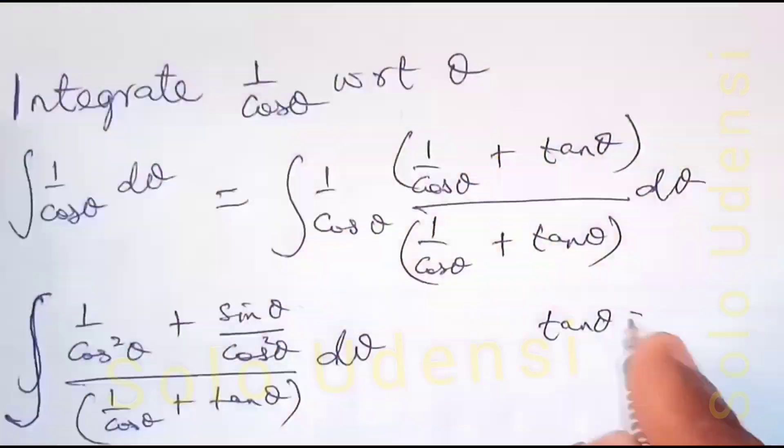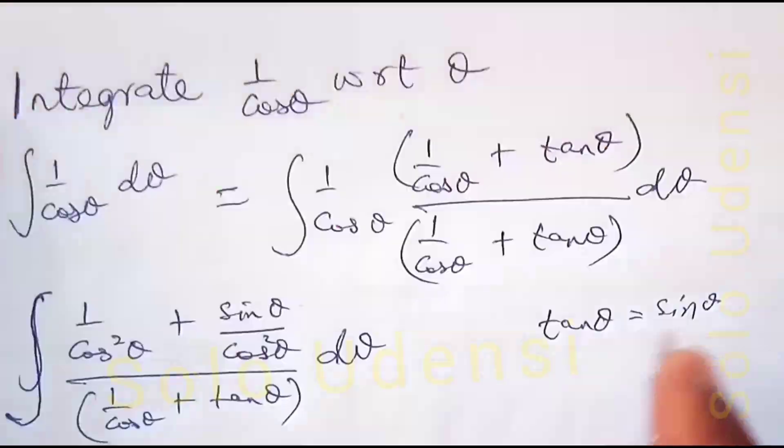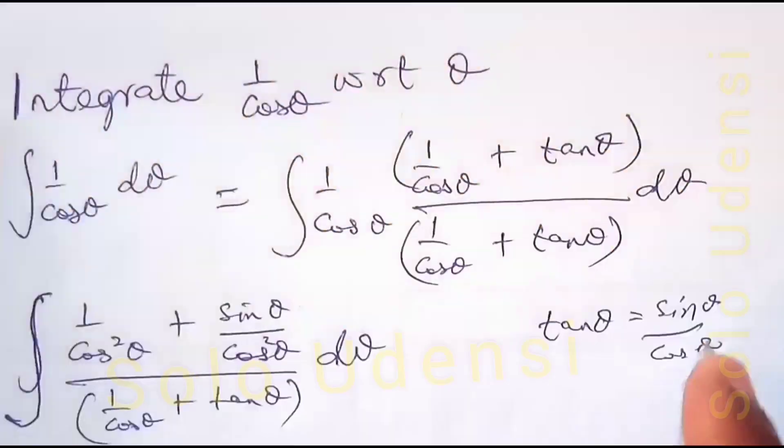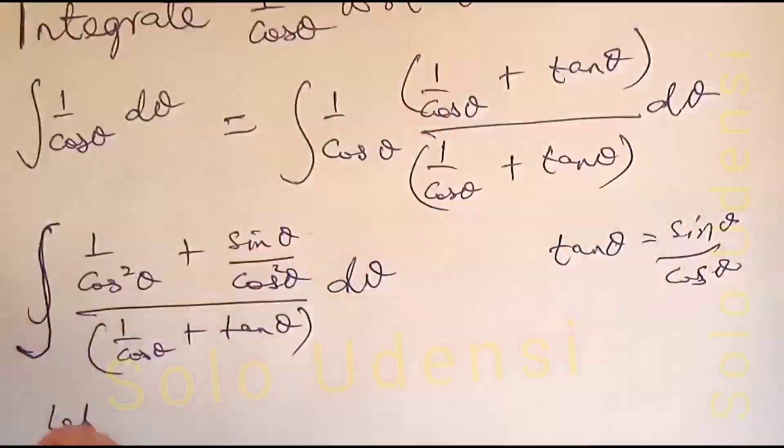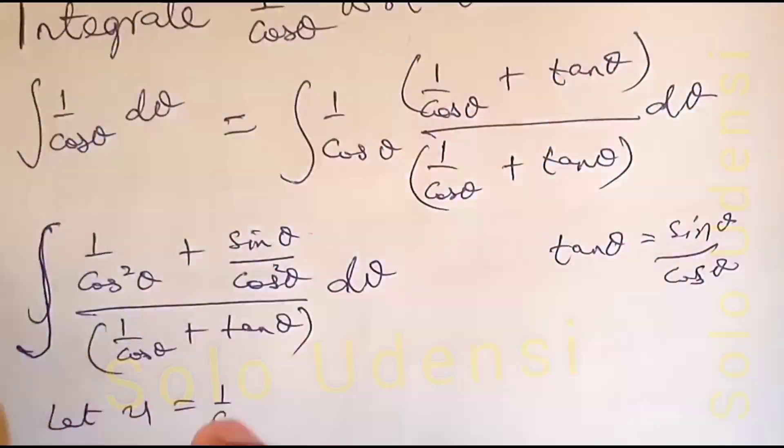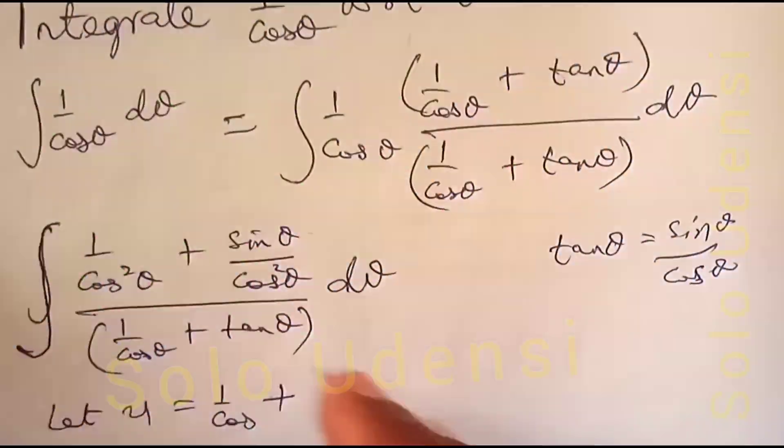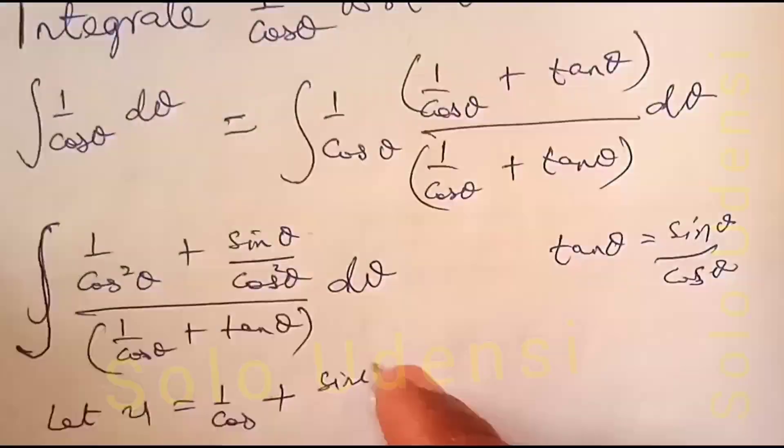Tan theta is sin theta over cos theta. So we let u equal 1 over cos theta plus tan theta.